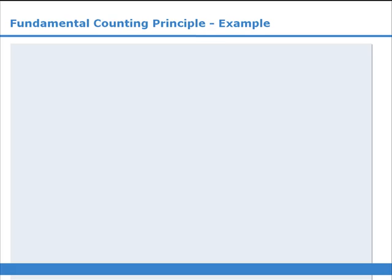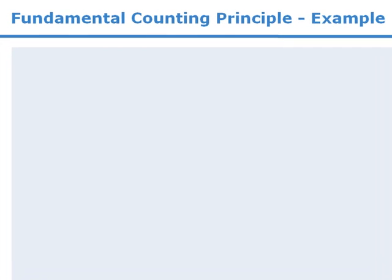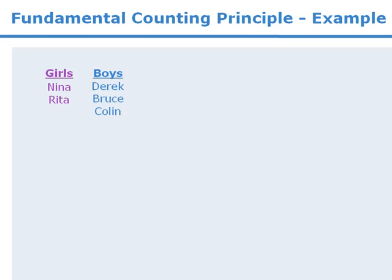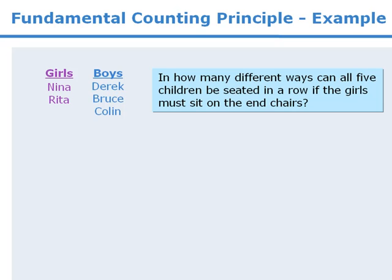Let's examine a question that can be solved by applying the fundamental counting principle. We have five children, two of which are girls and three of which are boys. We want to know in how many different ways can we seat all five children in a row if the girls must sit on the end chairs.